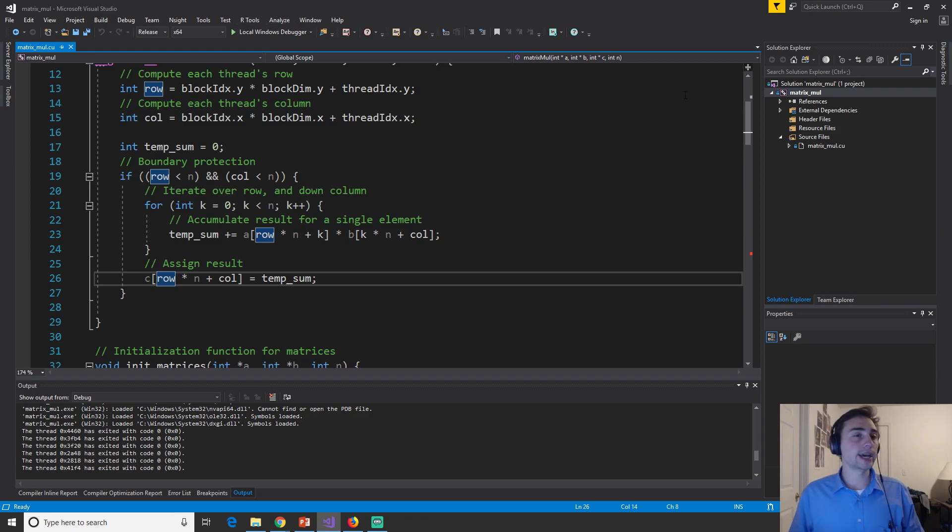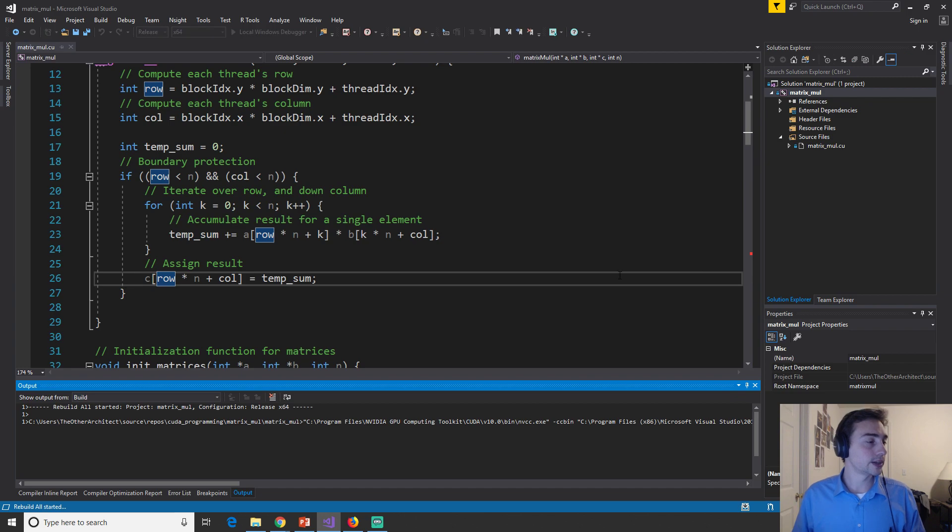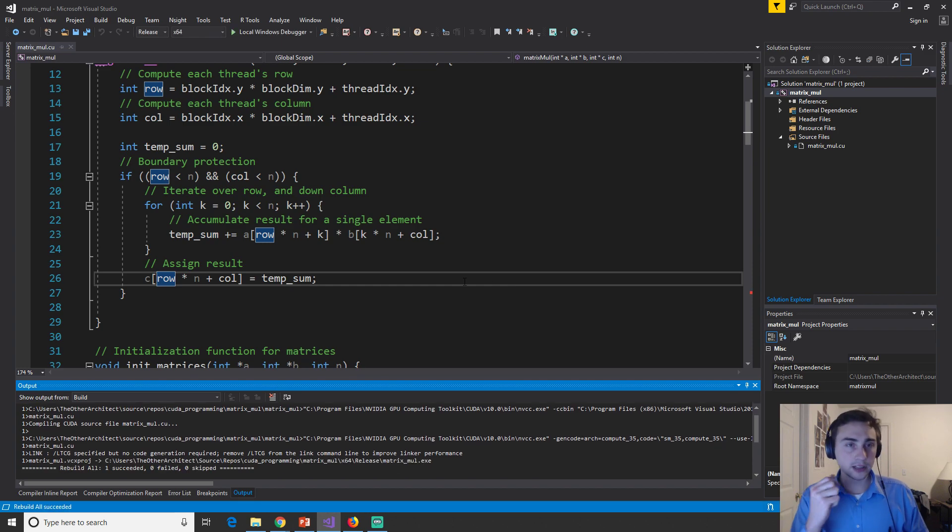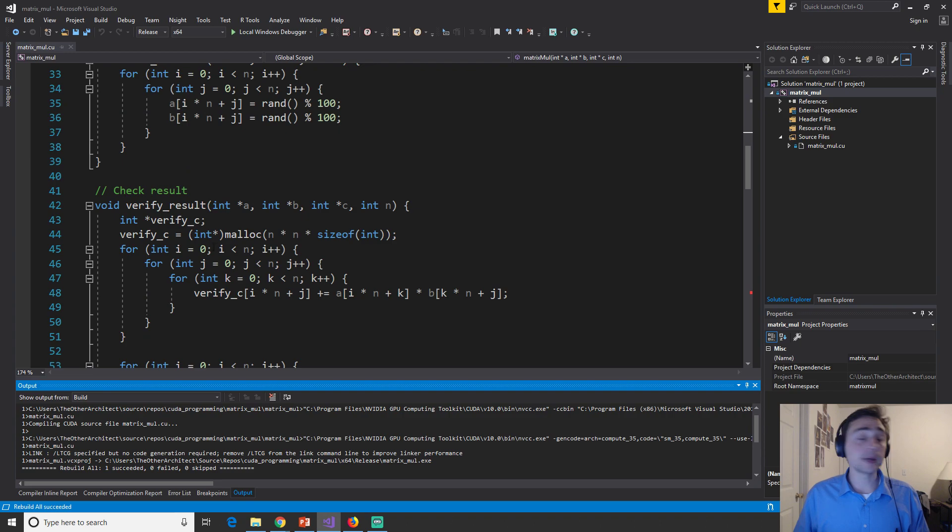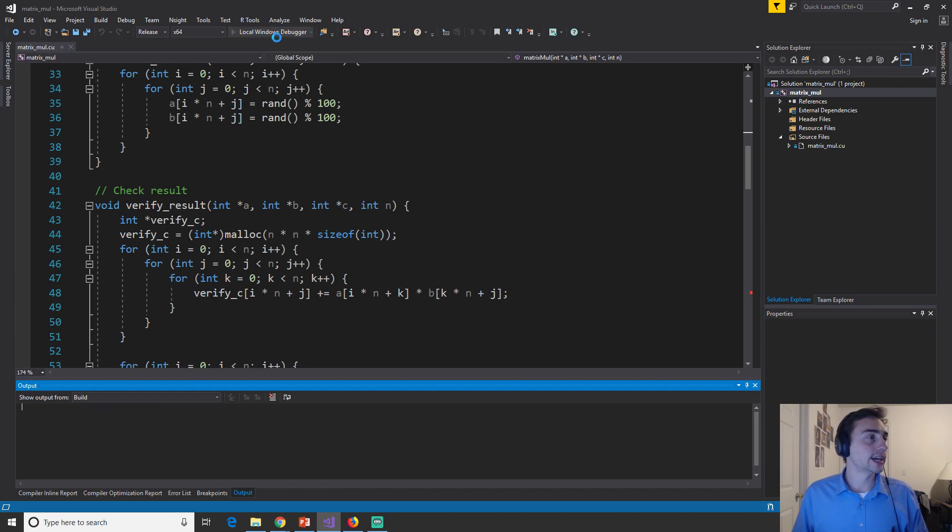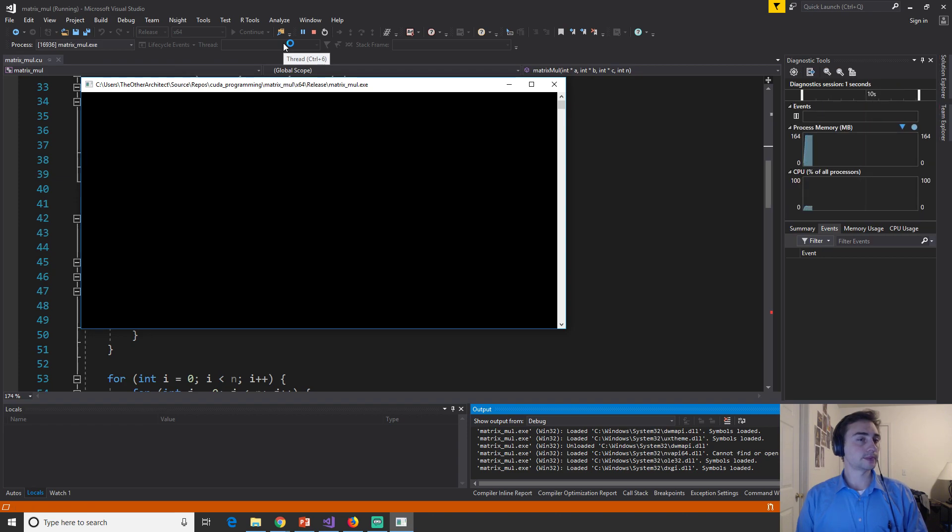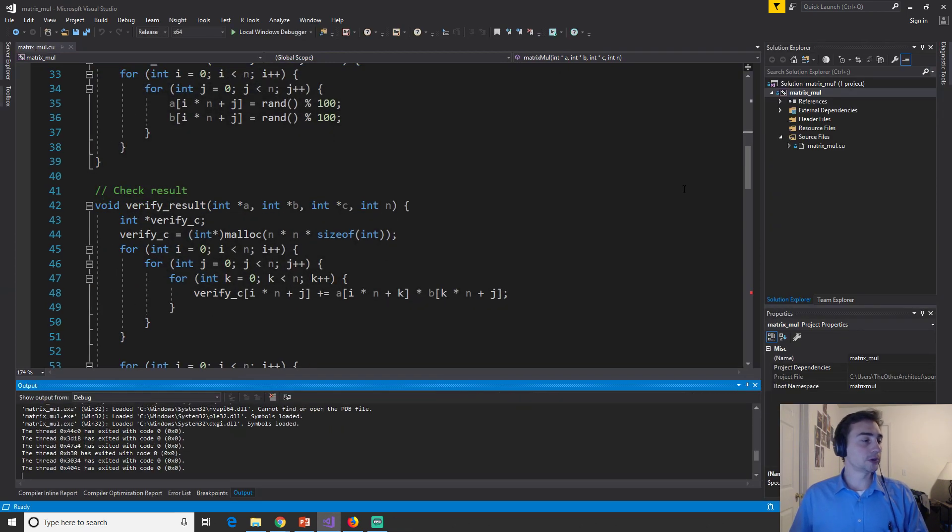So we can go ahead and build this. So we'll rebuild. And this one takes a little bit longer to run because remember we're doing this verification and doing this serially on the CPU takes a long time. The GPU matrix multiply actually runs pretty quick. So we're mainly waiting on the CPU verification and we'll run now mainly doing the CPU as you can see a high memory usage. And we're done.